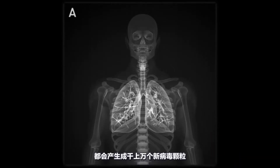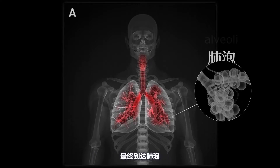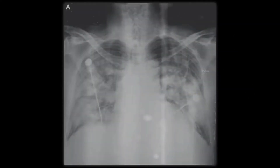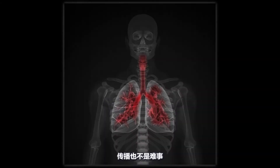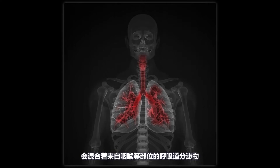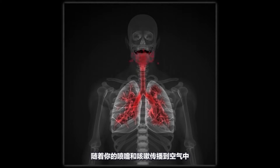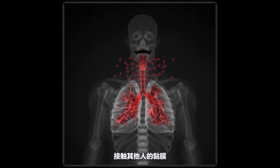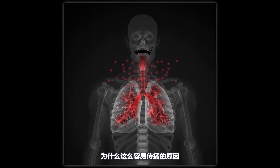Each infected cell will generate thousands of new virus particles, which spread to the trachea, bronchi, and eventually the alveoli, causing pneumonia. After the infection, spreading is not a hard job. Saliva, secreted by three pairs of salivary glands, would be mixed with the respiratory secretions from your throat and other parts of your body, allowing your coronavirus-laden saliva to transmit into the air by your sneezes and coughs, contacting others' mucosa. Mucosa infections and airborne transmissions — that's why the novel coronavirus is so easily transmitted.